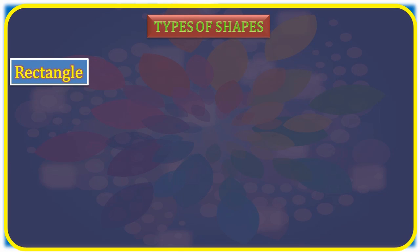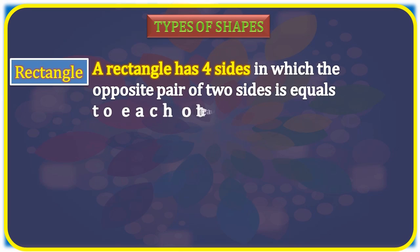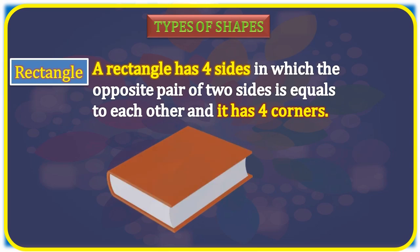Rectangle. A rectangle has four sides in which the opposite pair of two sides is equal to each other and it has four corners. For example, this book is in rectangular shape.